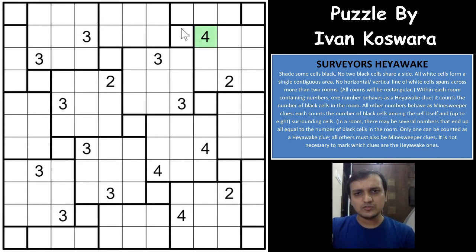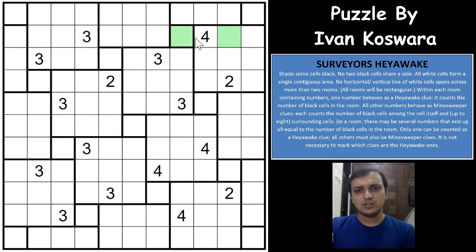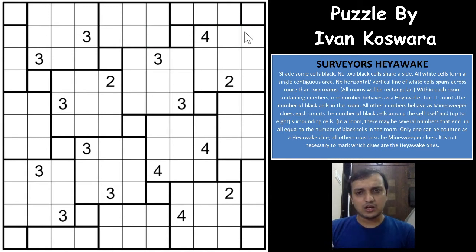So this configuration is possible but this one is not — you cannot have continuous unshaded cells spanning more than 2 rooms. You can have a maximum of 2 rooms, and all the white cells in the grid will have to be connected to each other. That is what the Heyawake rule says.